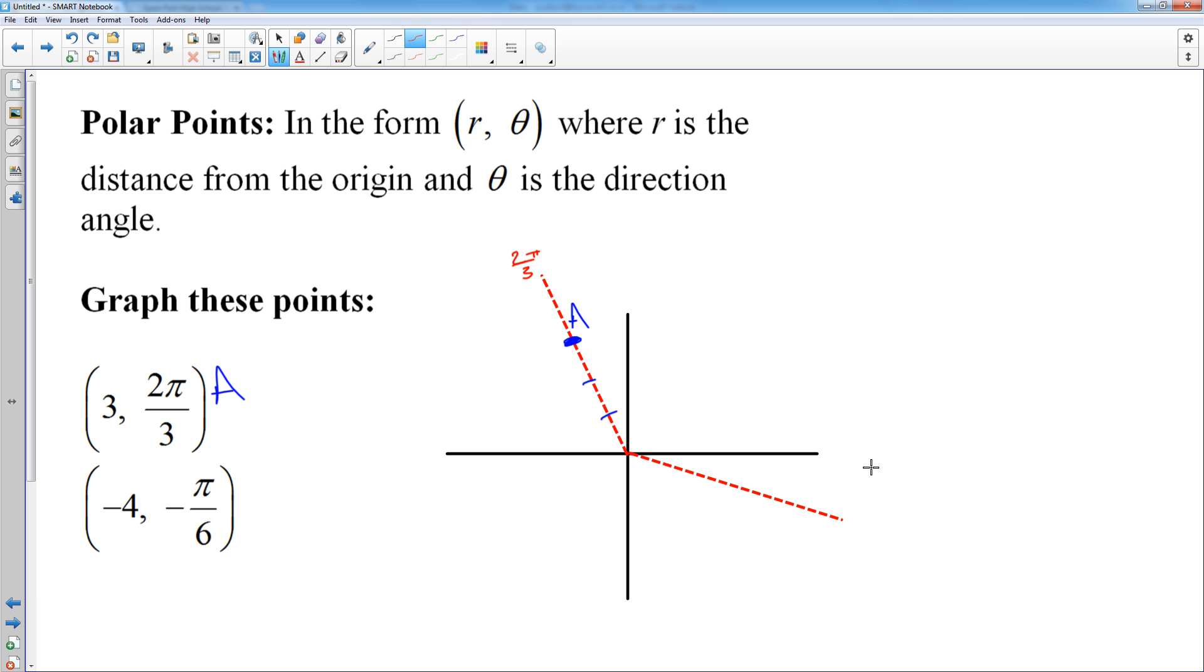Now this one I actually gave you a negative r, and if you end up with a negative r, that means you run away from your direction angle. So I'm actually going to take this angle, extend it backwards, and we will actually run away from negative π over 6. So I'll actually go this way, 1, 2, 3, 4 units. And that will be point B.